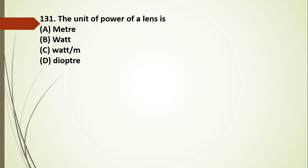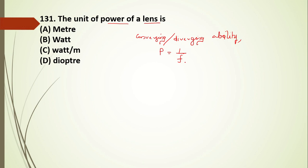Question 131: the unit of power of a lens. The converging or diverging ability of an optical instrument is called the power of a lens. It is expressed as 1/f, the reciprocal of focal length in meters, or 100/f when f is in centimeters. The normal unit is meter⁻¹, also called diopter.